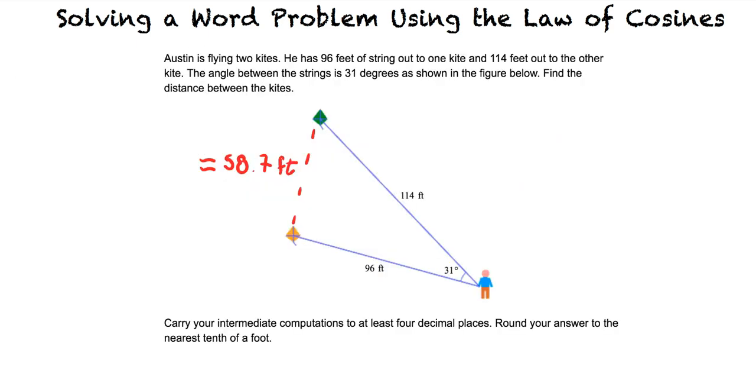In summary, first we create a triangle and assign variables to every side and angle. Then we figure out which variable we are trying to solve for and select the correct equation. Once the equation is chosen, the known variables are substituted in. Finally, the equation is solved for to find the unknown side or angle.